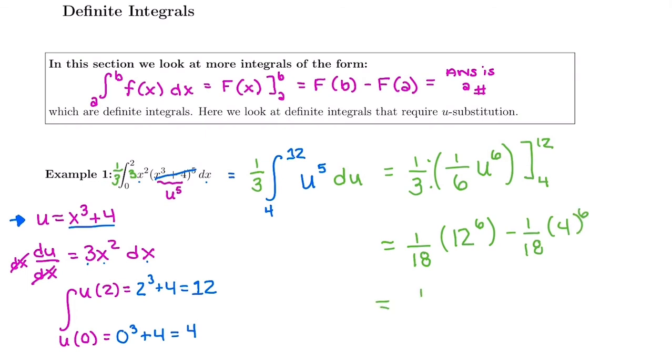And I typically, how I would plug it in, is I would just keep that 1/18 out front and I'd do 12⁶ minus 4⁶. I think that's the fastest way to plug it into your calculator. However you want to plug it in, what you should get is 165,660.4 repeating.